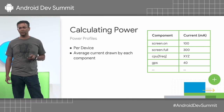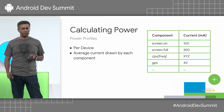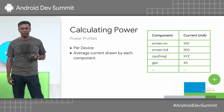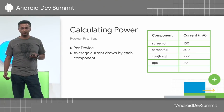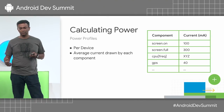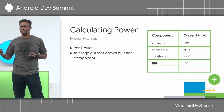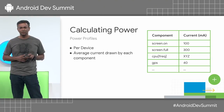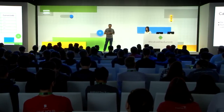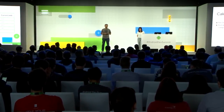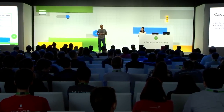What the power profile contains is the average current drawn by various subsystems that we want to measure in real time. For example, if you turn the screen on at minimum brightness, it might be about 100 milliamps. And if you crank it up to full brightness, depending on the technology, let's say it adds another 300 milliamps. So we keep track of that in real time. CPU at different frequencies has different power consumption, so we have that in the power profile as well.